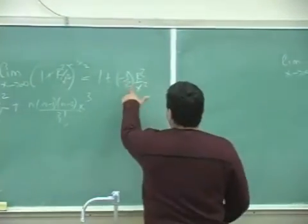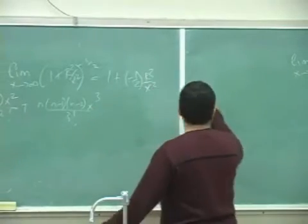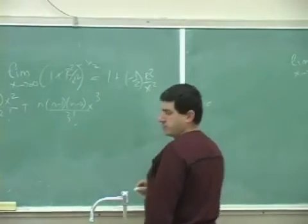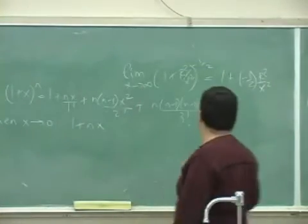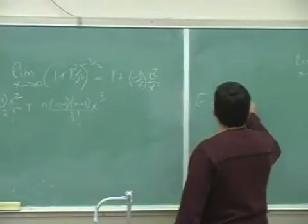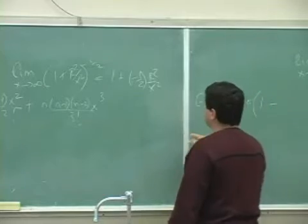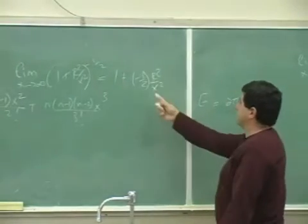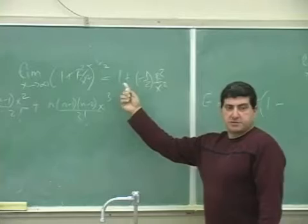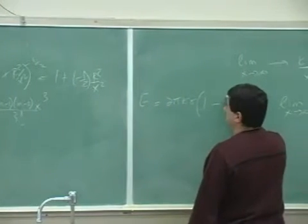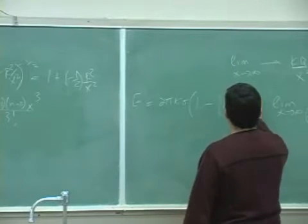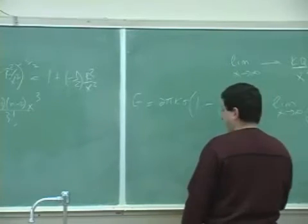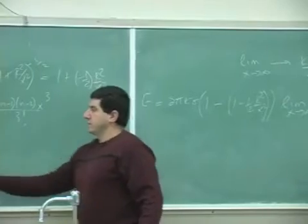Apply that to the total electric field. We get, what was the function? I erased it. 2 pi k sigma, 1 minus, and 1 minus, now we put this, the limit.